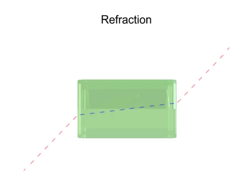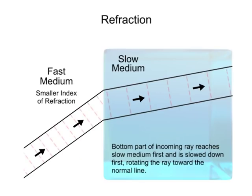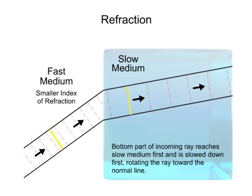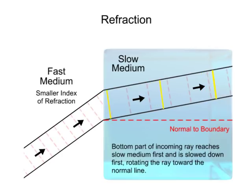To better visualize this phenomenon, let's look at this diagram. As a beam of light reaches the surface of a medium, the lower portion enters first and is slowed down. However, the upper portion is still traveling at the speed of light until it arrives at the surface and enters. This speed difference at the top and bottom aspects of the light path causes it to pivot, bending toward what is referred to as the normal — an imaginary line drawn perpendicularly to the surface of the material.